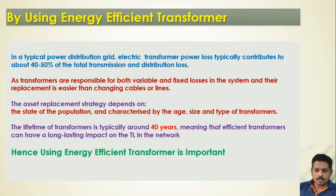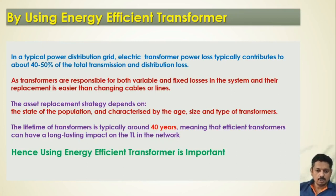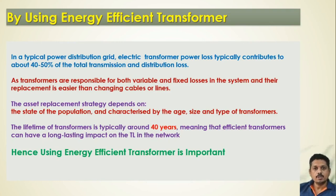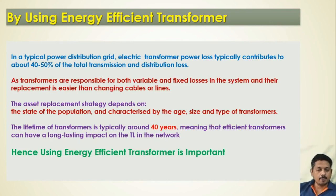Next is using energy-efficient transformers. In distribution networks, transformer power loss is around 40 to 50 percent of total transmission and distribution losses. It is therefore very important to address these losses. Transformers are responsible for both variable and fixed losses, and their replacement is easier than replacing cables or entire lines. The typical life of a transformer is around 40 years, so selecting an energy-efficient transformer is critical.